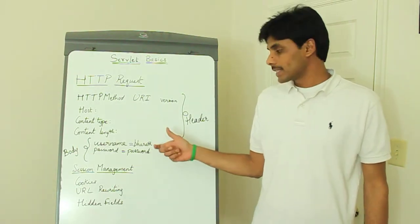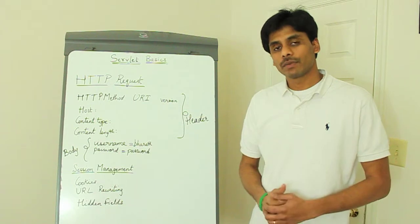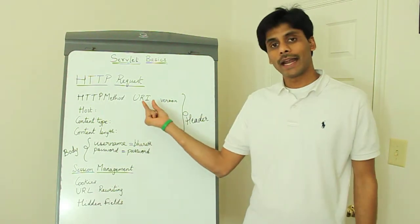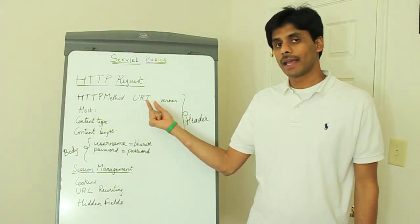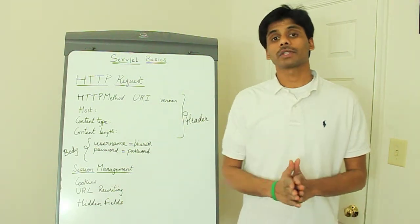So going back to our example, if you use a GET method, the username and password will be appended to the end of the URL, separated by an ampersand. And the server will retrieve them by using the request.getParameter.